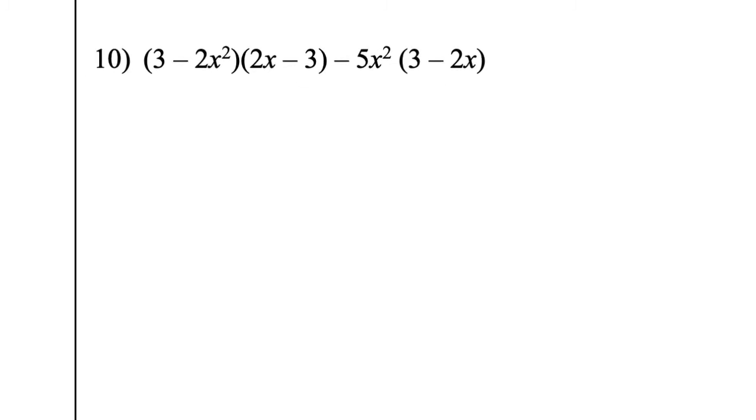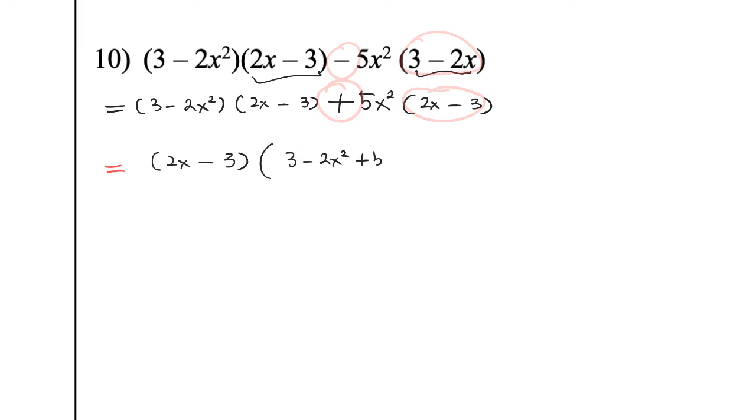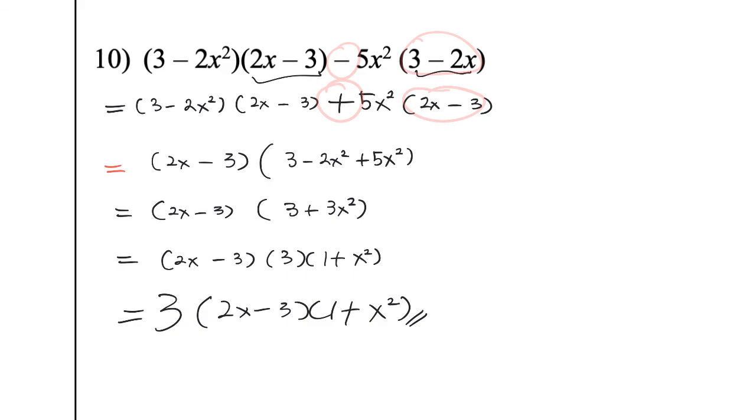For the last one. So just like what I have mentioned, this one and this one, they look like similar. But what you can do will be you change it first. So after you change it, then you can see that this is what I mentioned, the changing. This is why I have to change it. Change the order. And then you can take out the common term together, which is 2X minus 3. And then this is 3 minus 2X squared plus 5X squared. And you have 2X minus 3. And then 3 plus 5X squared. Some of you stop here. But actually you have to do one more step, which is take out 3 here. And at the end, put the number first. And that is the answer at the end.